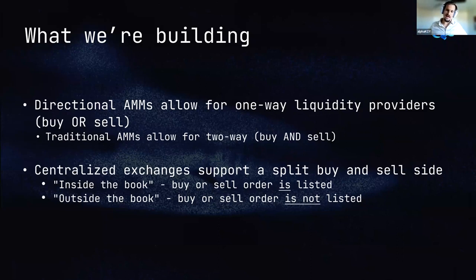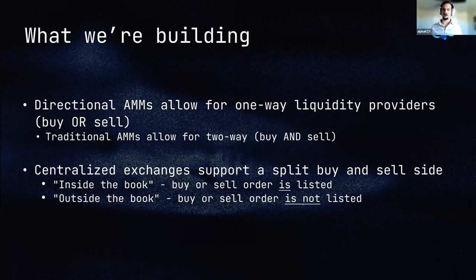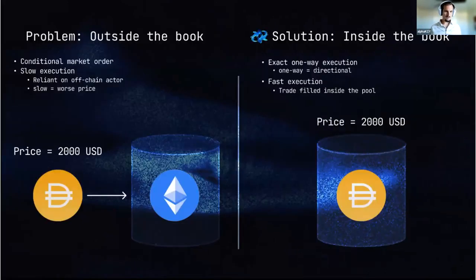Centralized exchanges today have a split buy and sell side. I'll use two terms throughout the presentation: "inside the book," which refers to the buy or sell order being listed in the actual order book — ready to be executed — and "outside the book," which refers to the buy or sell order not actually listed in the order book or, in this case, the liquidity pool. Today, in a lot of cases, we're doing off-chain execution, which results in a conditional market order — you still take the price that's there when you reach the AMM and your transaction is executed.